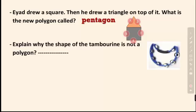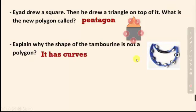Another exercise: explain why the shape of a kidney bean is not a polygon. It's not a polygon because it has curves — two curves — and it doesn't have any straight sides.